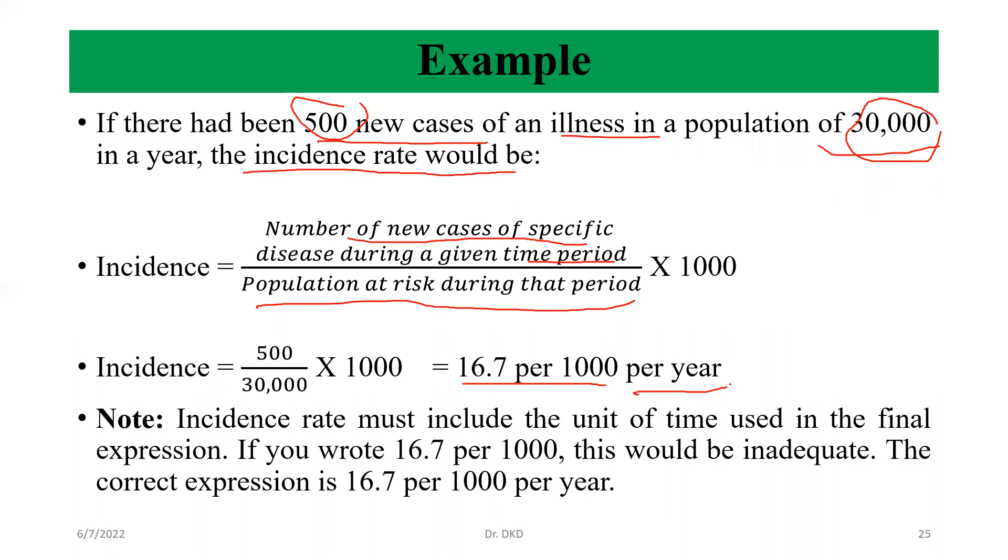Another way we can interpret it: incidence rate must include the unit of time used in the final expression. If you wrote 16.7 per 1000, this would be inadequate. The correct expression is 16.7 per 1000 per year. Time is important. If you are not mentioning the time, your interpretation would be incorrect.